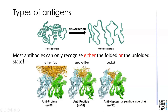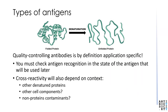Quality control of antibodies is by definition application-specific. This means that antigen recognition must be checked in the state of the antigen that will be used in the actual experiment. Importantly, cross-reactivity will also always depend on context — what other denatured proteins are around, what other cell components are around, what other non-protein contaminants might be around that bind to the antibody. There is no absolute measure of specificity — it will always be context-dependent.